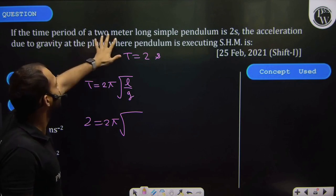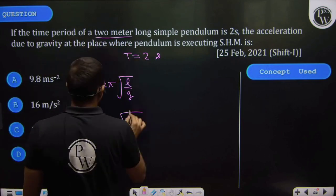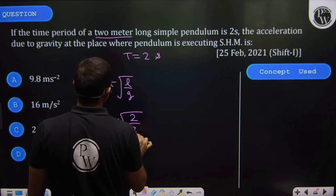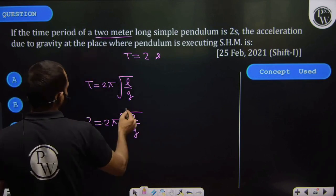The time period of a two meter, two meter is given. L is two meter divided by G. The G value we have to calculate is G dash.